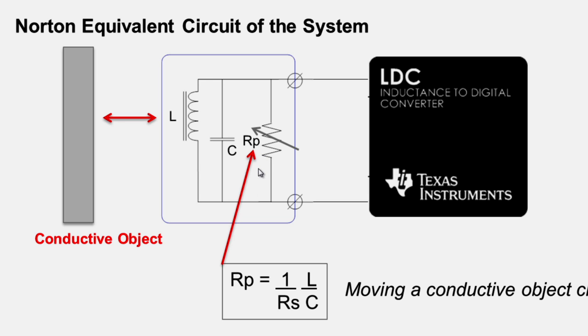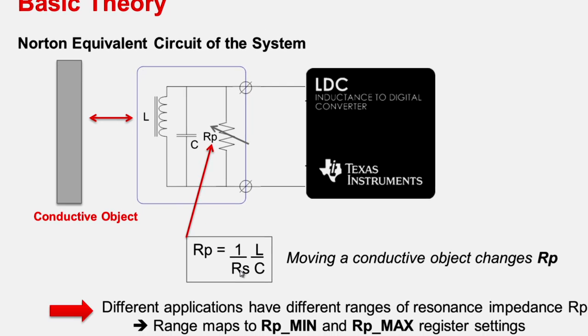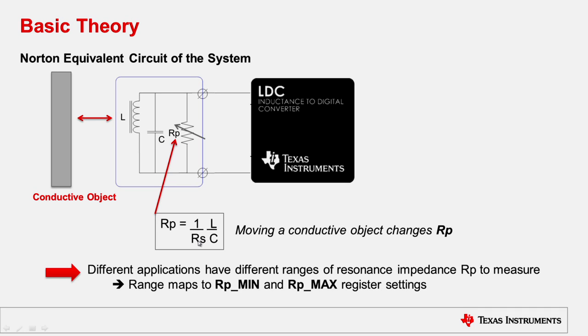The LDC is very sensitive to changes in L and RP. And different applications have different ranges for this resonance impedance. This is important to keep in mind as you set up your system and set up the RP-min and RP-max register settings.